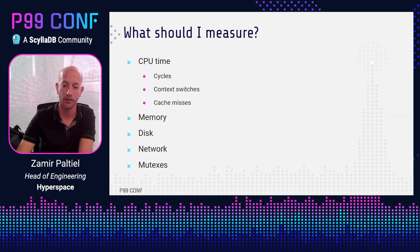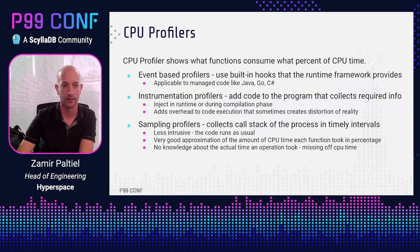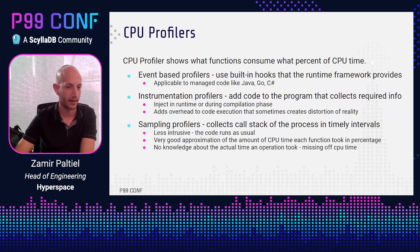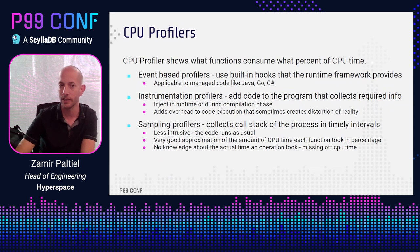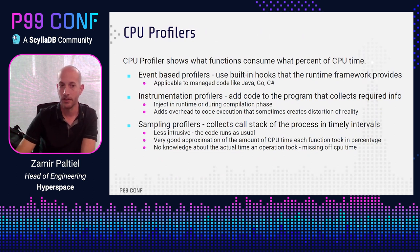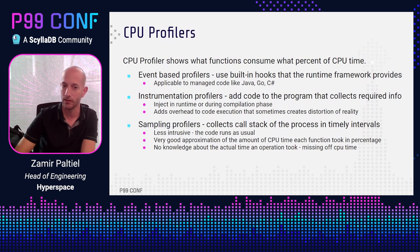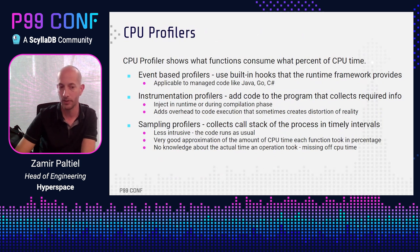I want to show how developers measure code speed today with common tools. The most common one is CPU profilers, which show what functions consume what percentage of CPU time. There are different kinds: event-based profilers use built-in hooks that the runtime provides, usually in managed code like Java, Go, and C#, and they're not available in other languages. Instrumentation profilers inject code into your program that collects required data using callbacks. This affects the way the program runs and adds some overhead that sometimes creates bias — a distortion of reality — and you should be very careful with that.